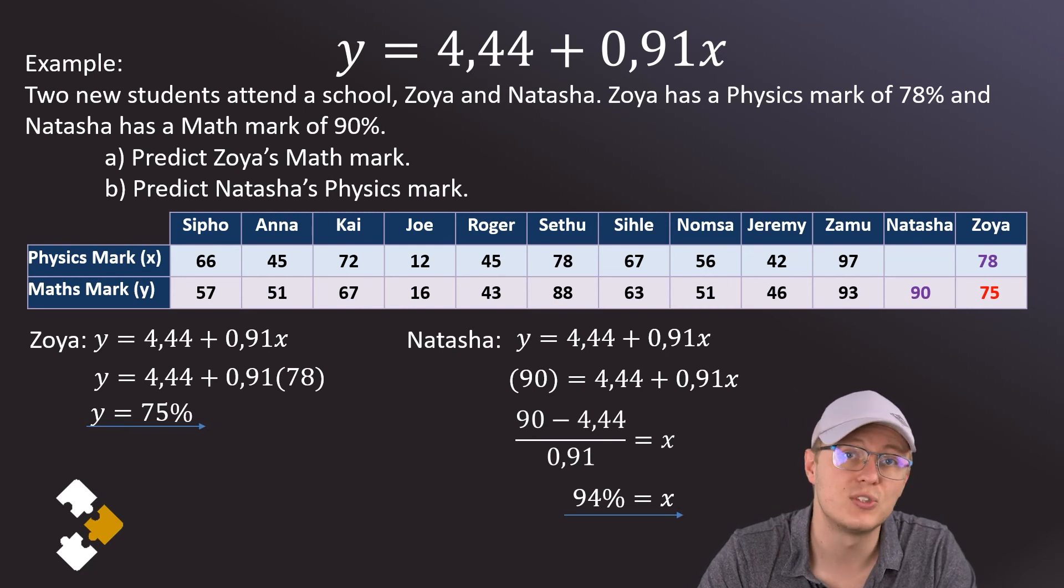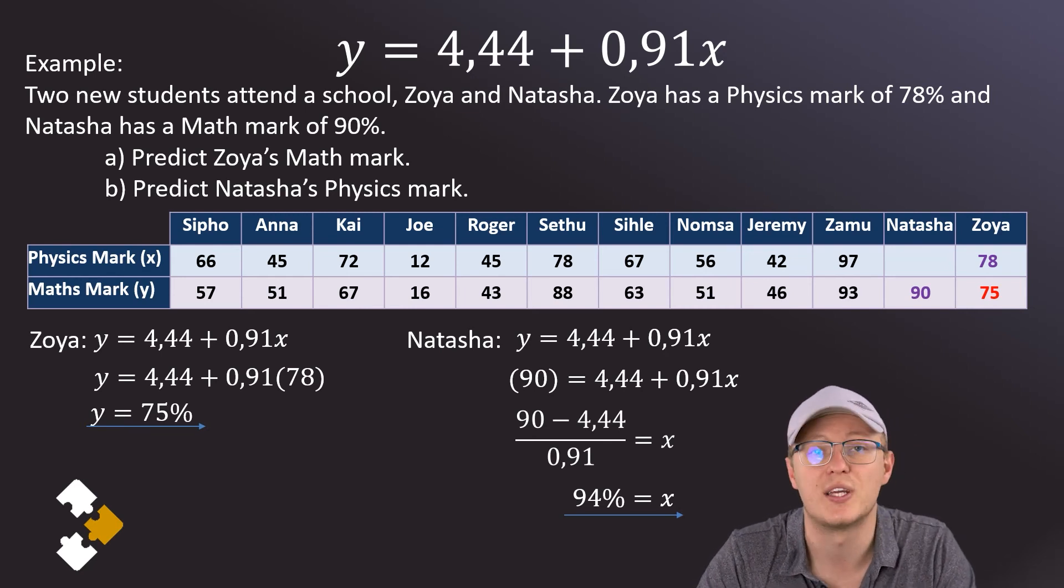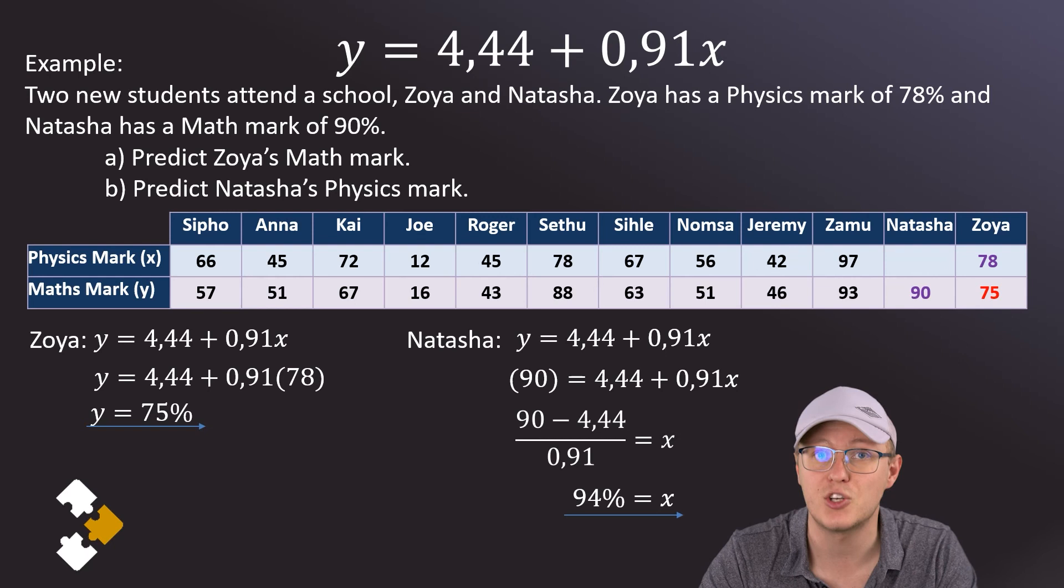So that's how we use our least squares regression line. We can use it in order to make predictions about expected x or y values if we know an x value or a y value.